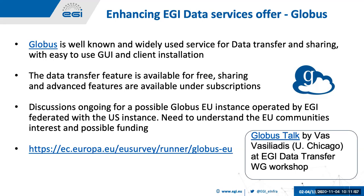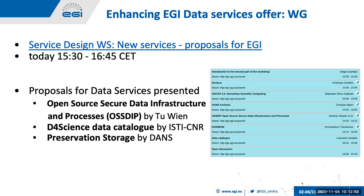There is a Globus talk by Vas Fasiliati from Globus at the EGI transfer workshop explaining the architecture and features of the service. Later today there will be a service design workshop with a new service proposal for EGI at 3:30, with presentations about possible new services including open science data catalog and preservation storage — giving the possibility to discuss possible extensions and enhancements to the EGI data service offer from other providers.